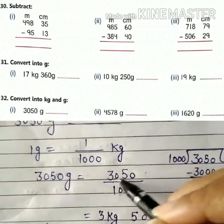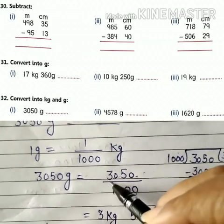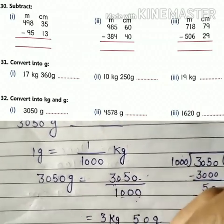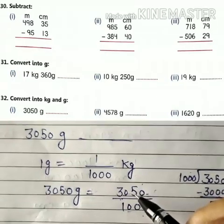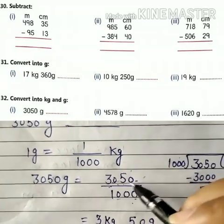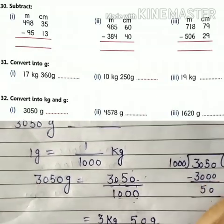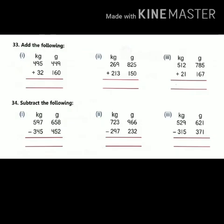So the remainder is 50 grams. Question number 33: add the following, and question 34: subtract the following. These are simple addition and simple subtraction, so you can do them yourself, as we have done similar questions in previous classes.